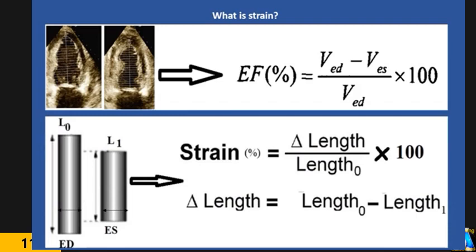Strain is the same — it measures the percentage of change. Depending on the type of strain: longitudinal measures the length of the segment, and finally wall rotation or circumferential. All of them give you a percentage of deformity, depending on what kind of deformity you are measuring.